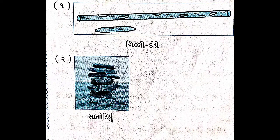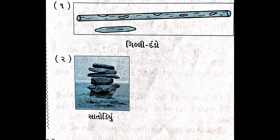હવે બીજી રમત સાતોળીં - એક ટીમ બોલ ફેંકીને ગોઠવેલા પત્થર પાડી નાખે છે, અને બીજી ટીમ ફરી ગોઠવવાનો પ્રયત્ન કરે. પત્થર ગોઠવવા સમયે, ગોઠવનારને બોલ વડે સામેની ટીમ સ્પર્શ કરી દે - ટચ કરી દે - તો તે આઉટ થઈ જાય છે. આ રમત રમવાની ચિલ્ડ્રનને ખૂબ જ મજા આવે છે.